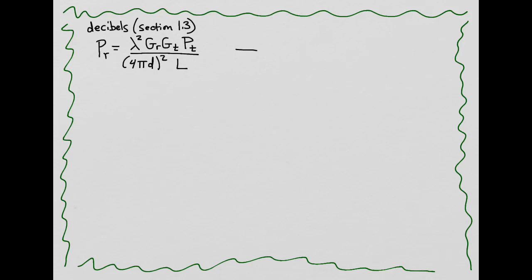Let's think of the transmission media — the wireless channel — as if it were a type of amplifier. As such, it has an input signal with a certain power, PT, and then it has an output with power PR. So in terms of the channel, it receives an input with power PT and produces an output with power PR.